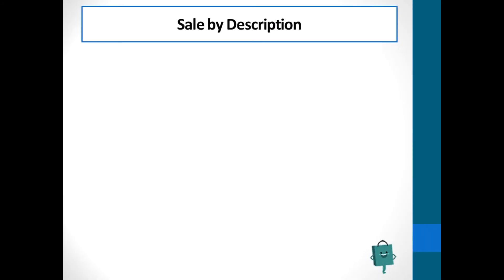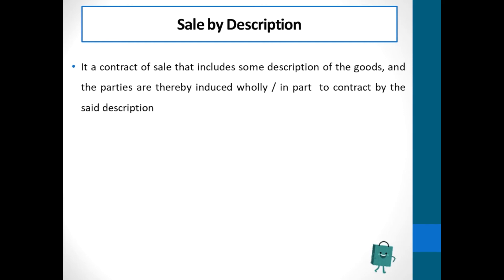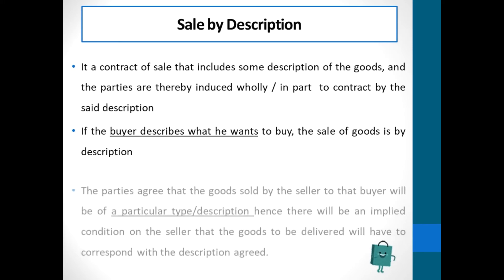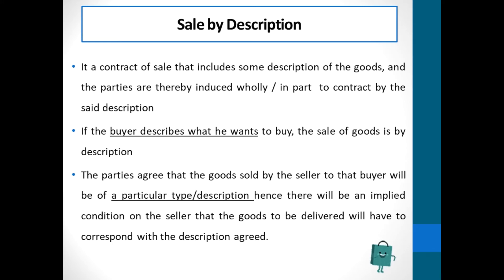Sale by description is the next contract we have. It is a contract of sale that includes some description of the goods, and the parties are thereby induced wholly or in part to the contract by the said description. If the buyer describes what he wants to buy, the sale of goods is by description. The parties agree that the goods sold by the seller to the buyer will be of a particular type or description. Hence, there will be an implied condition on the seller that the goods to be delivered will have to correspond with the description agreed. For instance, a particular motor car model which is red in colour.